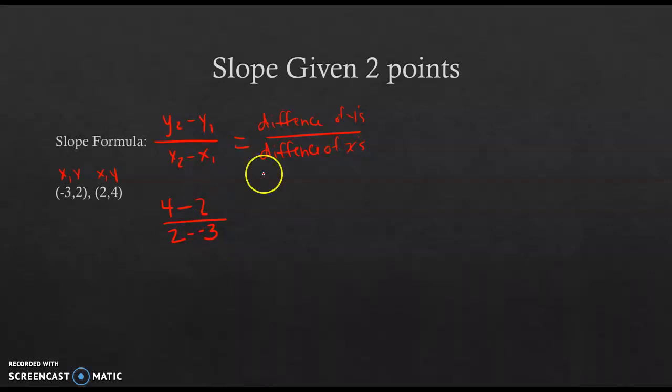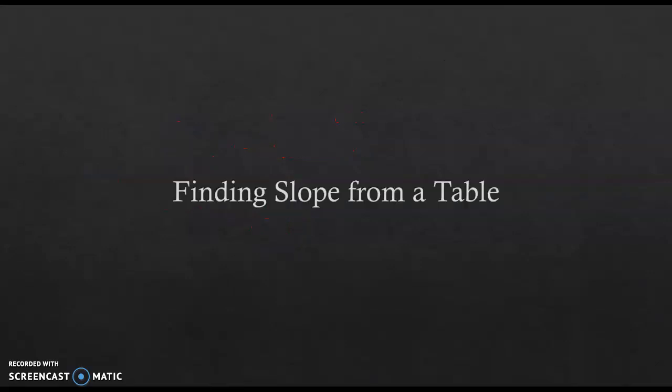From here we just subtract. 4 minus 2 is 2. 2 minus a negative 3 becomes 2 plus 3. This is why you should write down and show your work anyway. This is work you need to be writing down, your setups. 2 plus 3 is 5, and so the slope between these two points is we rise 2 and we run 5.